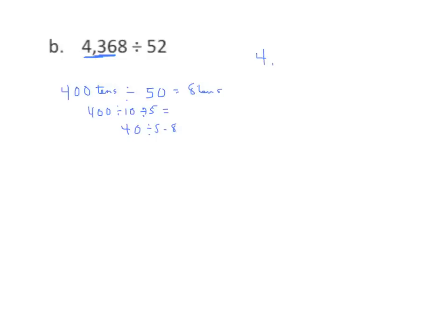I have 4,368 divided by 52. We're working with 8 in the tens place, so I'm going to put my 8 in the tens place. We're going to try that out by multiplying 52 times 8. Regroup, and I get 416. I'll subtract that and I get 20. The 20 is less than 52 — that's good.